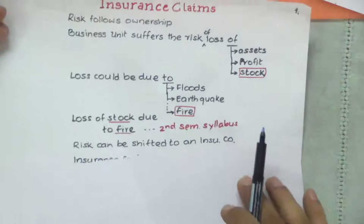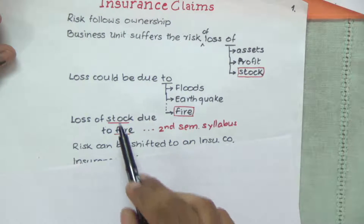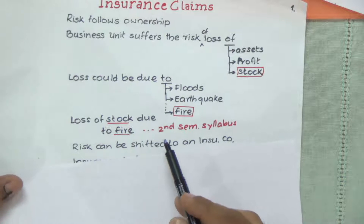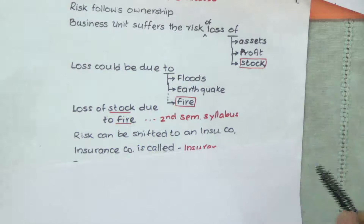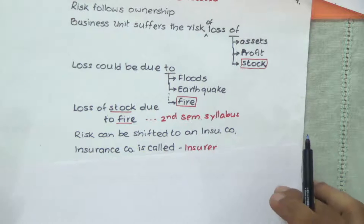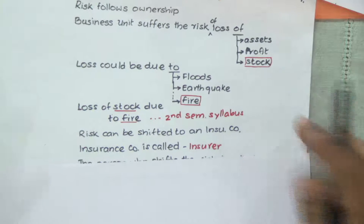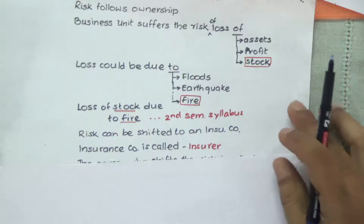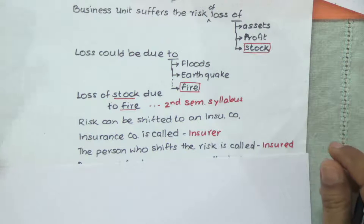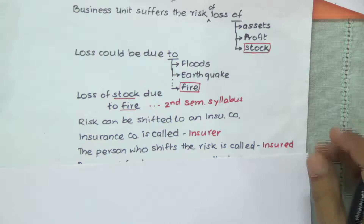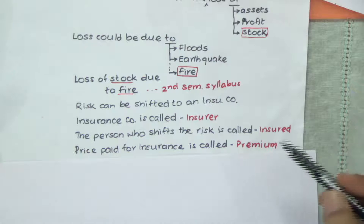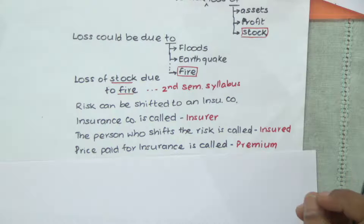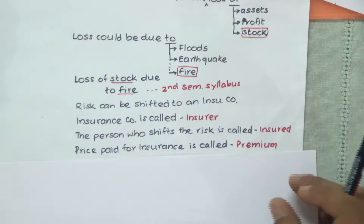Loss of stock due to fire is the portion covered for your second SEM syllabus. The risk can be shifted to another person, and that person is called the insurance company. The insurance company who covers the risk for you is called the insurer, and the person who is shifting the risk — that is you — you are called the insured.